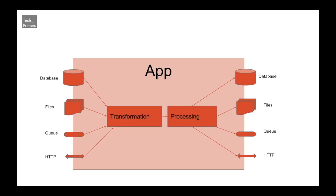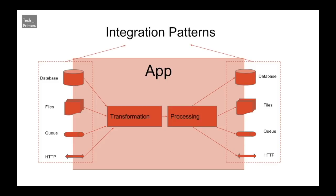For databases we use the JDBC template provided by different frameworks; for files we have a different framework; for queues another framework — for each and every technology we have been using a different framework and library. What if we combine these together? That is what integration frameworks are. Integration frameworks provide flows, libraries, and APIs out of the box for integrating applications with different technologies. These are called integration patterns.